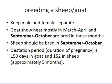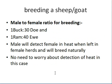To manage breeding, we keep males and females in separate sheds or partitions. Goats typically show heat in March–April and September–October. Sheep are more inclined to come into heat in September and October — a sort of seasonal breeding, which is not the case with cattle. The gestation period or duration of pregnancy is 150 days in goat and 152 days in sheep, approximately five months.